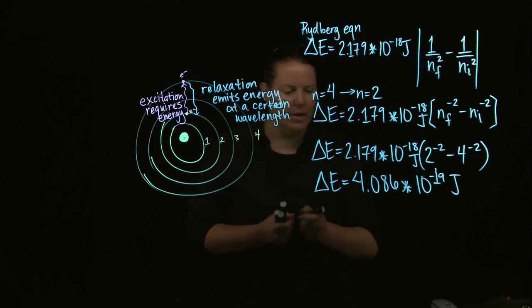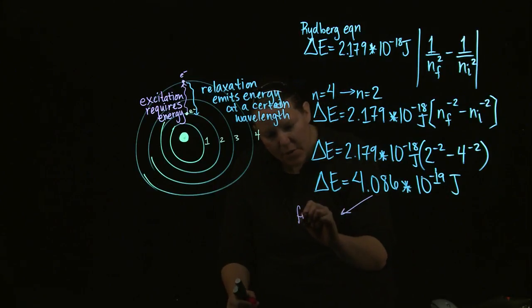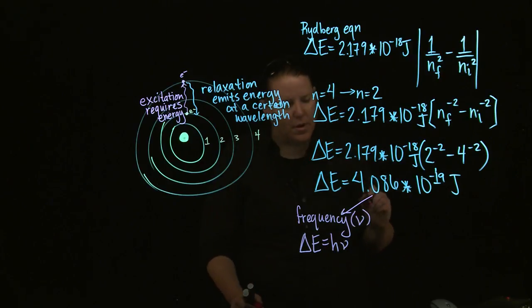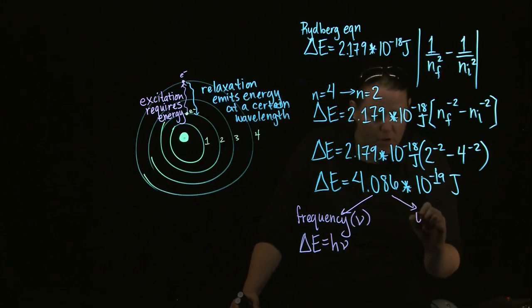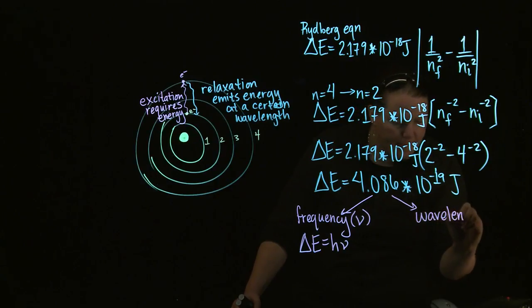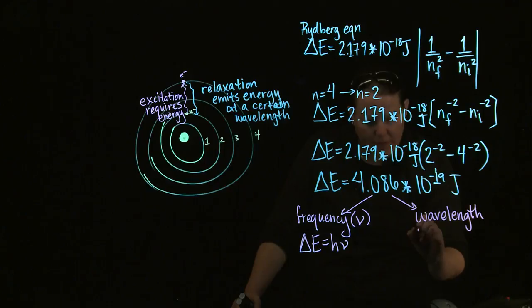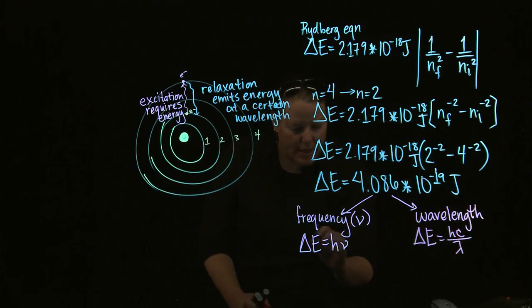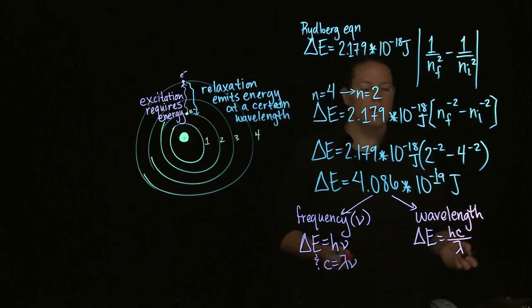Great, now I have two options. My options are I can calculate from here a frequency. If I needed a frequency, I would simply plug this into Planck's equation, where frequency is nu. Or I could find a wavelength directly. If I wanted to find the wavelength, I would plug this into a modified version of Planck's equation that combines Planck's equation and the speed of light equation. Okay, let's do the wavelength.